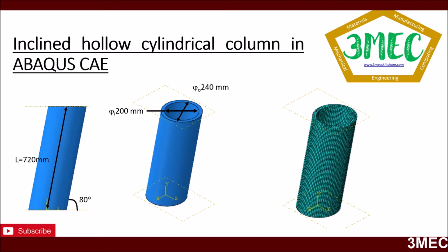Hello everyone, welcome to this video. Today I was asked by a subscriber to show how to make an inclined hollow cylindrical column in Abaqus CAE. In my opinion it's a bit tricky to make, and I'm going to show you one of the ways — there are many different ways you can do it. You can make it in any CAD software; it would be easier in SolidWorks etc., but if you're inclined to only model in Abaqus CAE, this is one way you can use.